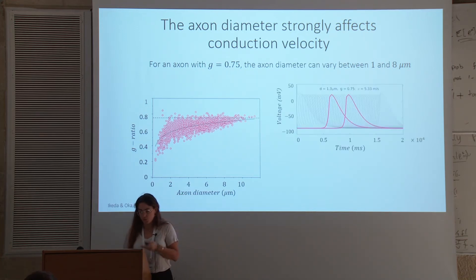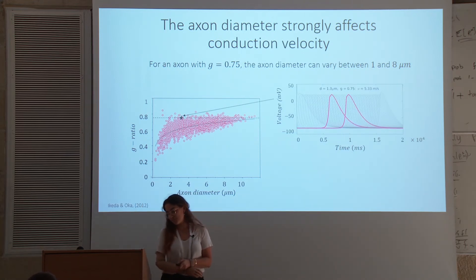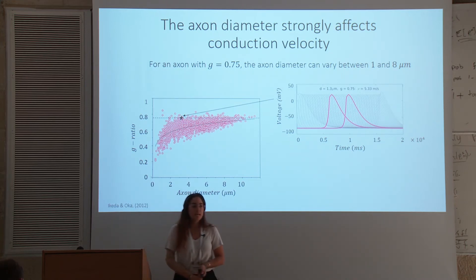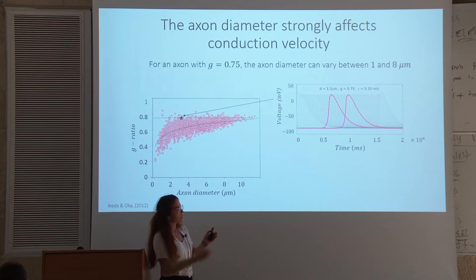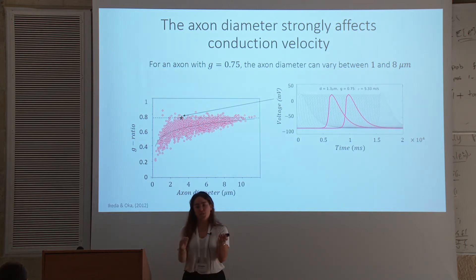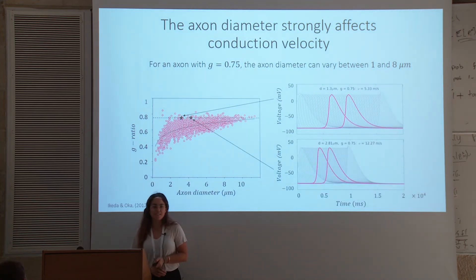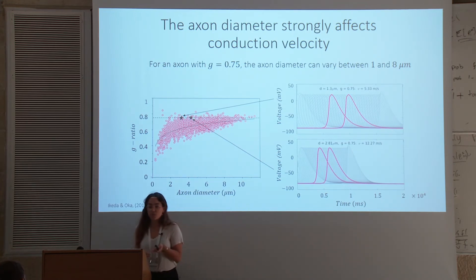This is a result of the numerical simulation for a single axon with a g-ratio of 0.75 and an axon diameter of 1.3 micrometers. You see the voltage as a function of time, representing the voltage at different nodes, and the two lines represent the 20th or 30th node, which is how we calculate velocity. Now if I go to the same g-ratio but a different axon diameter, you can already see that the conduction velocity is more than twice as large. So we cannot use the g-ratio-to-diameter relationship directly.